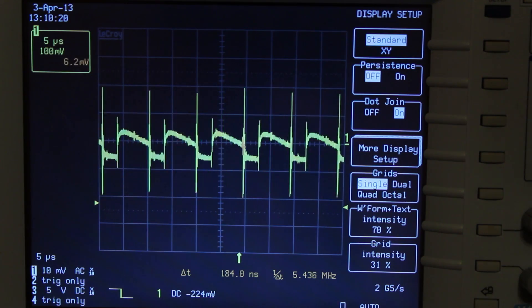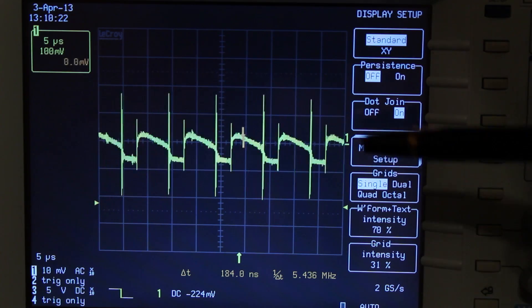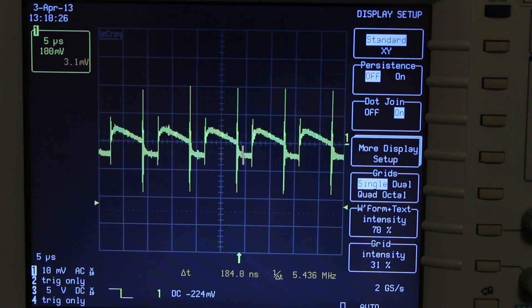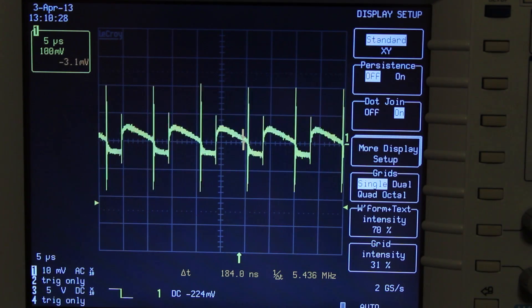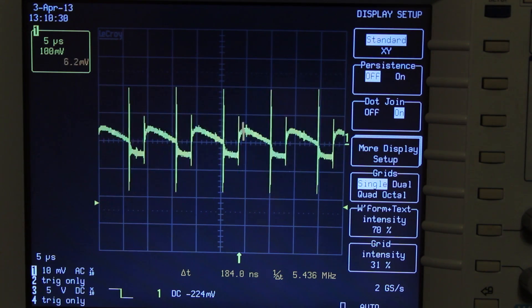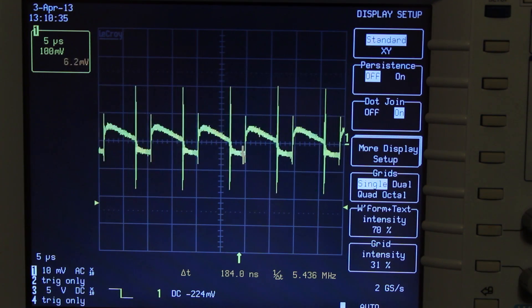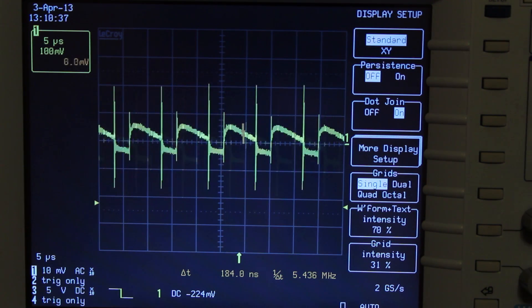Now we can see the switching frequency. And here we have the classic switching waveform of a flyback converter with a kind of square wave going on there. That is now at 5 microseconds per division. This is a 100 kilohertz power supply.